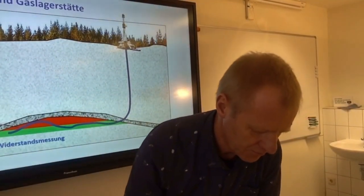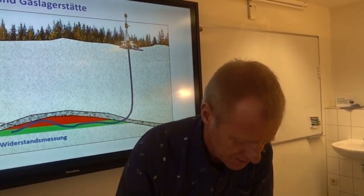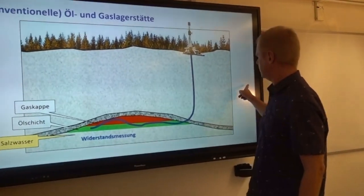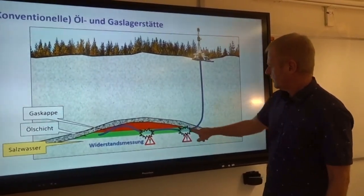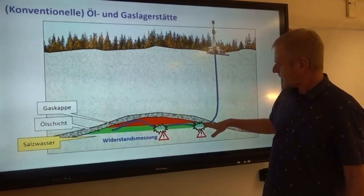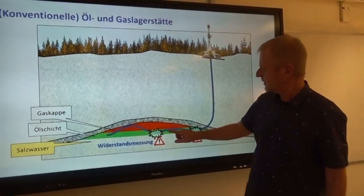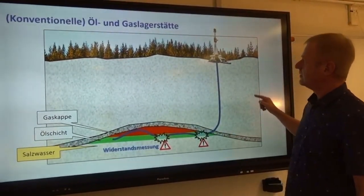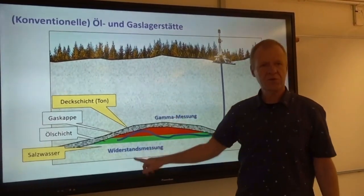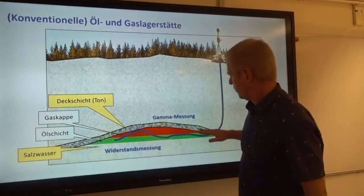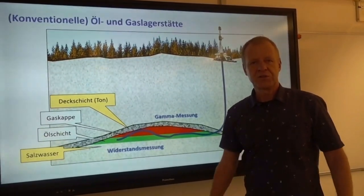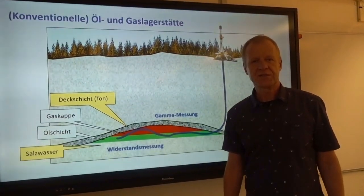With this sensor we can differentiate between the reservoir and the salt water underneath. And whenever the conductivity sensor gives too high a reading, we have to steer the well up. And so in this way, with the gamma sensor and with the conductivity sensor, we can stay in the reservoir for kilometers, without damaging it or leaving it.